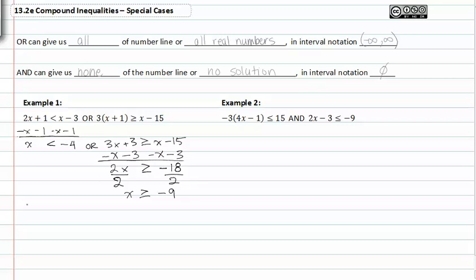So, the two solutions or the two inequalities that we've found are x is less than negative four or x is greater than or equal to negative nine. Let's go ahead and graph that.